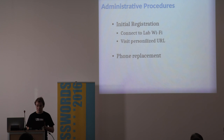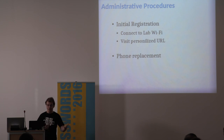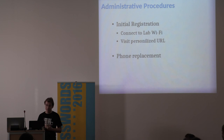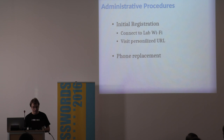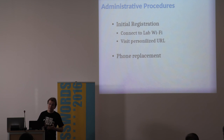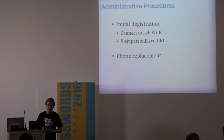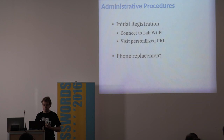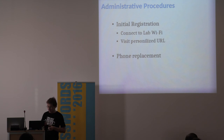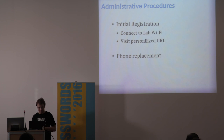You also have to consider phone replacement — people lose phones and replace them with new ones, although the rate is decreasing. You can automate the process based on your primary authentication scheme, and maybe have some safeguards. If someone does this more than once in three months, for example, they should probably contact the administration.